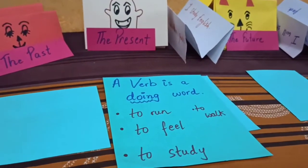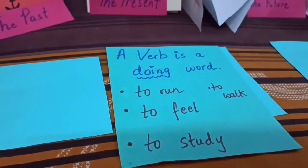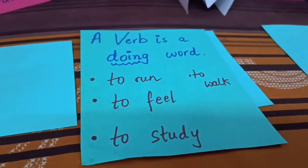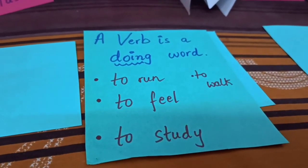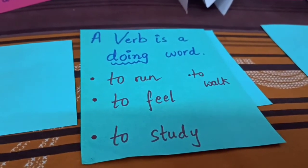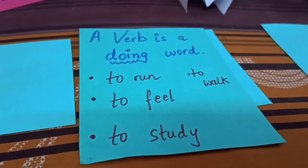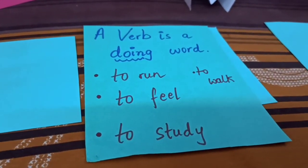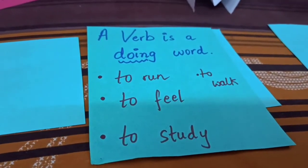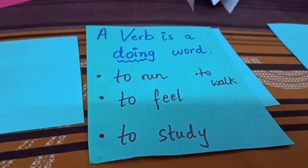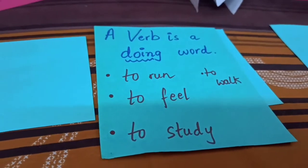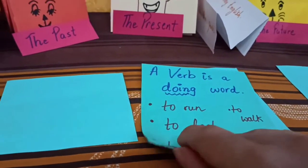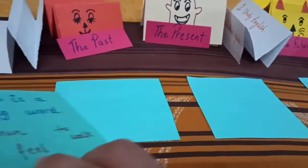We had talked about verbs. So what is a verb? A verb is a doing word and it talks about the action. For example: to run, to feel, to study, to walk. So let's continue with a new story today.